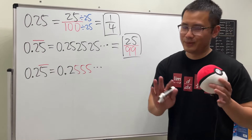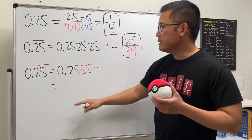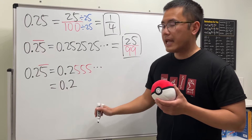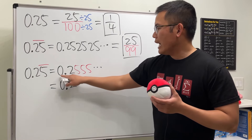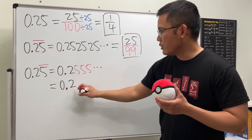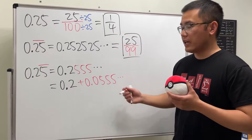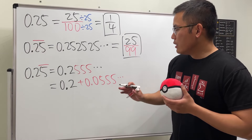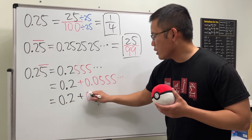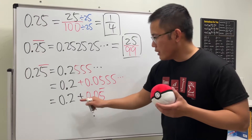How can we convert this into a fraction? One way is to treat it as a combination of both cases. We break it apart: this is the same as 0.2 plus 0.0555... forever. We can write this as 0.2 plus 0.05 with a bar on top.